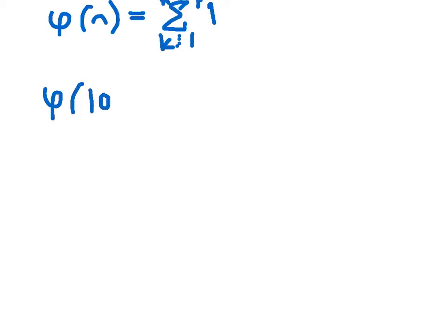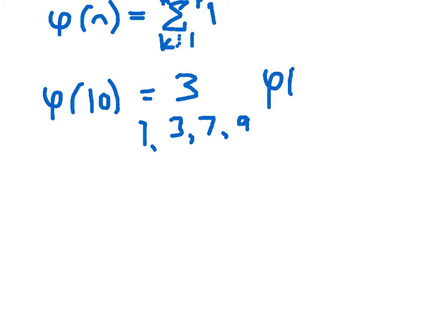So an example: phi of 10. Well, the numbers relatively prime to 10 — there's 1, 3, 7, and 9. So phi of 10 equals 4.